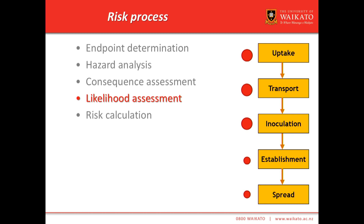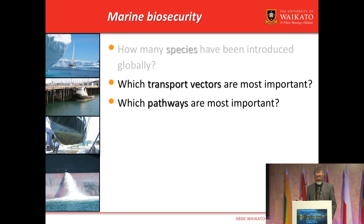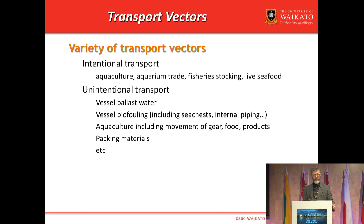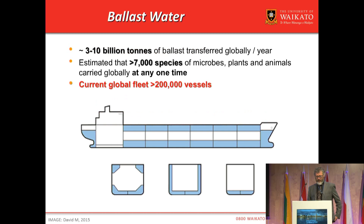How did the species get here? Which transport vectors and pathways are most important? A variety of transport vectors exist: intentional transport associated with aquaculture, aquarium trade, fishery stocking, and live seafood movements; unintentional transport specifically associated with vessels; and hitchhikers associated with aquaculture and packing materials. If we look at the life history characteristics of those 2,500 or so species, a very significant number of them are associated with vessel movements, and as a consequence, we've had a very significant focus on how we manage vessels into the future.